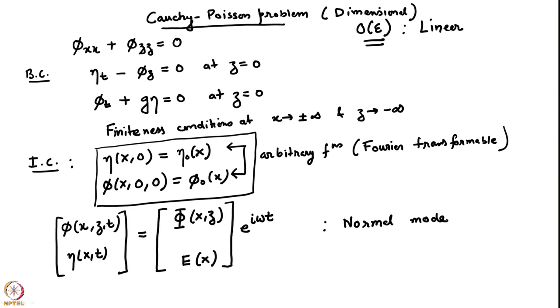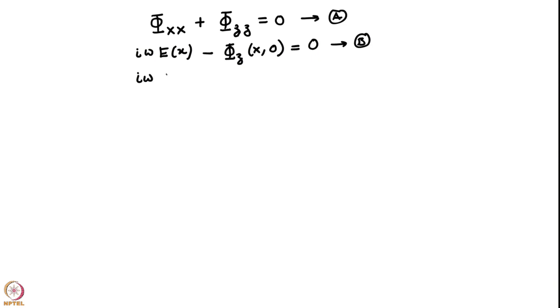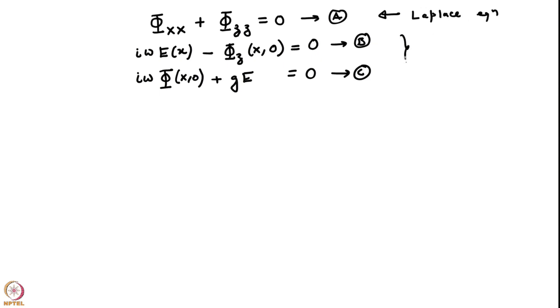We have to plug this into our governing equations. We obtain the Laplace equation, which just becomes an equation for capital Φ because the e^(iωt) does not do anything — I will call this equation A. Then in the boundary conditions, I have iω·E(x) minus the derivative φ evaluated at z=0, which I will call equation B. Then the linearized Bernoulli equation gives iω·Φ evaluated at z=0 plus g·E equals 0. So this is my Laplace equation and those two are my boundary conditions.